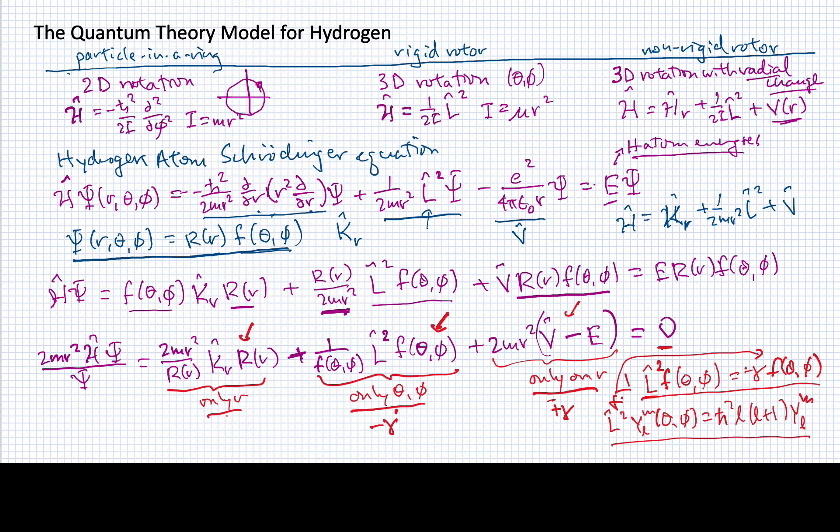This is that eigenvalue equation, which allows us to immediately identify this function f as a spherical harmonic. This value gamma equals this combination of constants, the eigenvalues of the angular momentum squared operator.